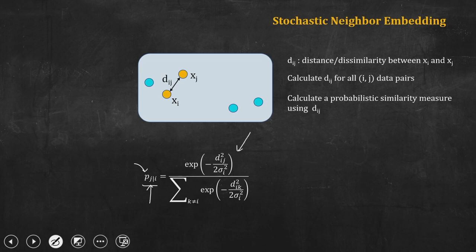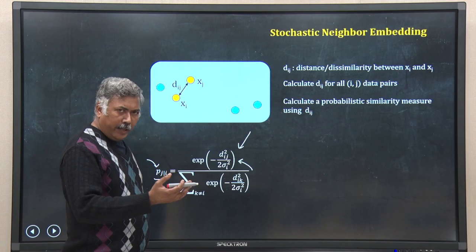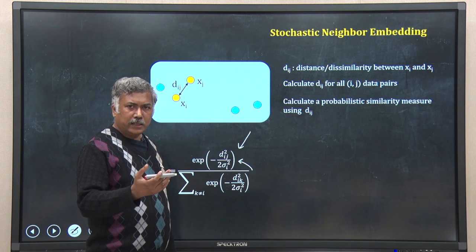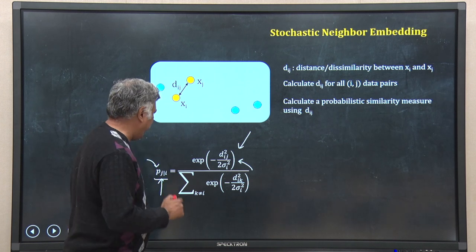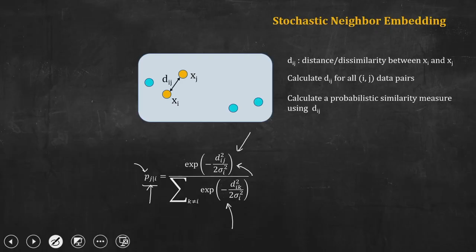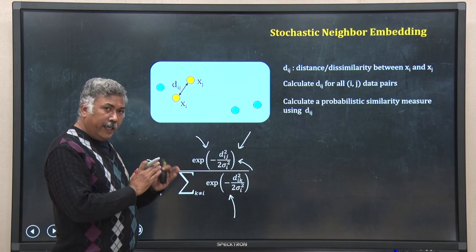In the numerator you have e to the power of minus d_ij squared divided by 2 times sigma_i squared, where d_ij is the distance or dissimilarity between x_i and x_j. The denominator is a summation that serves as normalization. For x_i paired with x_j, you calculate that numerator value, and then for all other pairs involving x_i you sum them up and put that in the denominator.